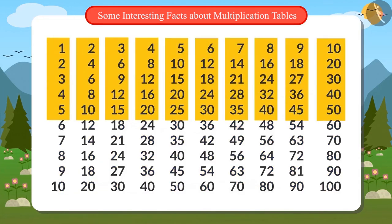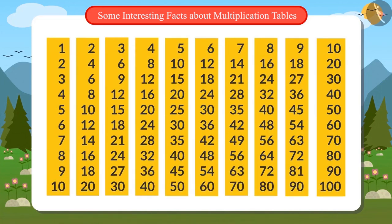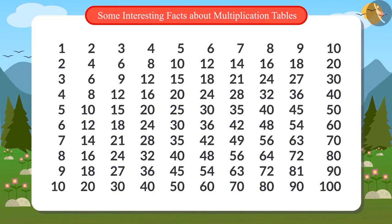And reading the lines top to bottom also gives the table of a number. Oh yes! This is an amazing pattern. Like, the first line from left to right is the table for 1, and so is the first line from top to bottom.